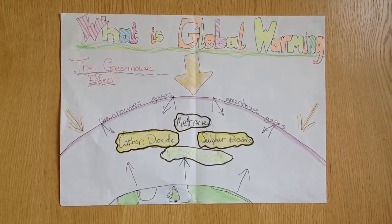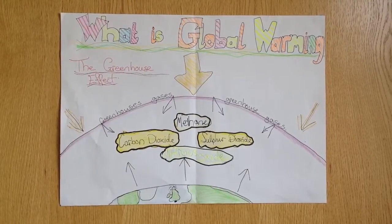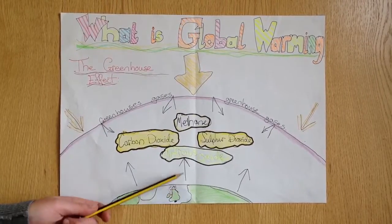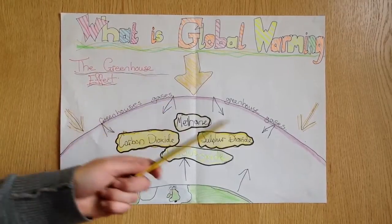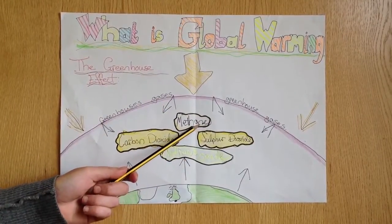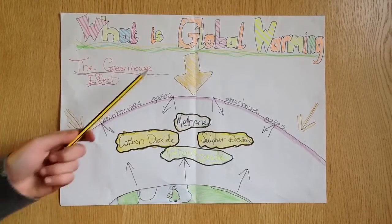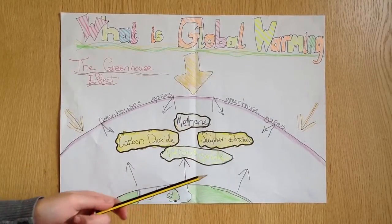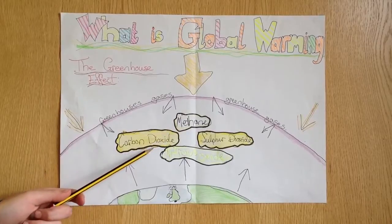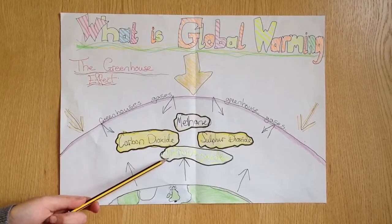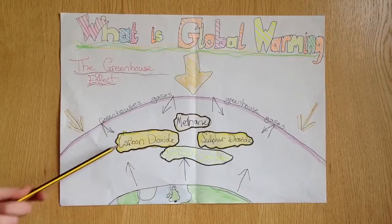A major environmental problem today is global warming, sometimes called the greenhouse effect. The greenhouse effect is the way the atmosphere traps heat from the sun that is reflected back off the Earth's surface. Gases such as carbon dioxide, nitrous oxide and methane hold in the heat, keeping the Earth's surface warm. Without this greenhouse effect the Earth would be too cold for life. People are adding more greenhouse gases than naturally occur: methane from landfill and farming, carbon dioxide from power stations, and nitrous gases from fertilisers. These trap additional heat, increasing the greenhouse effect and causing global warming.